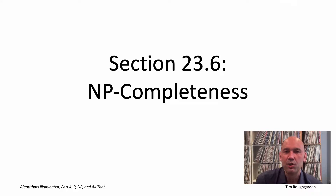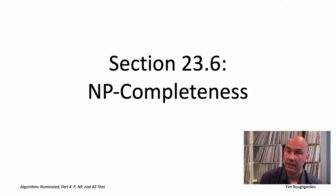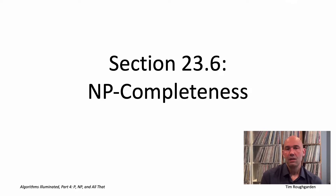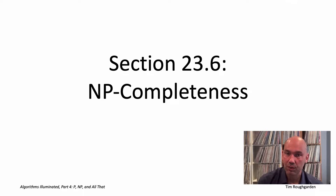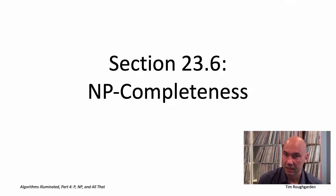Hi everyone, and welcome to this video that accompanies Section 23.6 of the book Algorithms Illuminated Part 4. This is the last section from the Optional Chapter 23, and it's a section about NP-completeness.